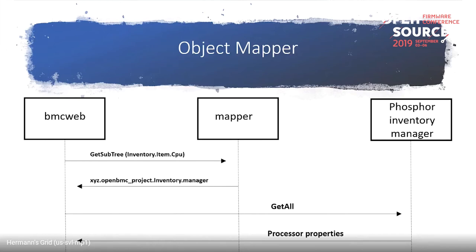In this example, BMC Web is calling mapper looking for the inventory item CPU interface. The mapper returns the service implementing that interface, and then BMC Web calls that service to get back all the properties. With this approach, IBM can use inventory manager and other companies can use entity manager, and BMC Web works for both.